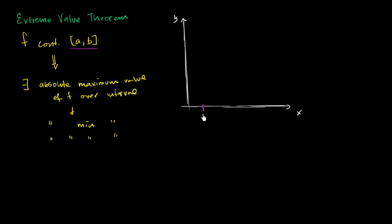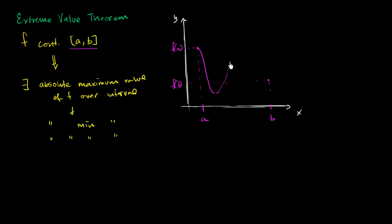The interval is from a to b. So let's say that this is a, and this is b right over here. Let's say that this right over here is f of a, and this right over here is f of b. And let's say the function does something like this over the interval — I'm just drawing something somewhat arbitrary. I've drawn a continuous function; I really didn't have to pick up my pen as I drew this.